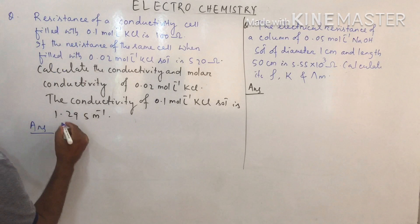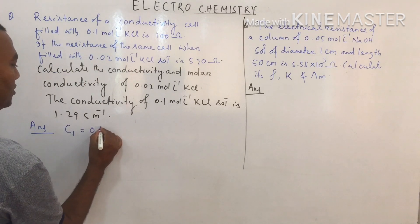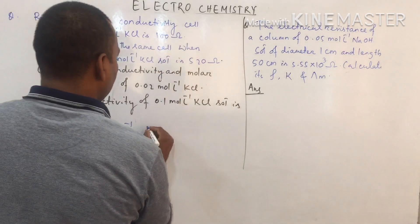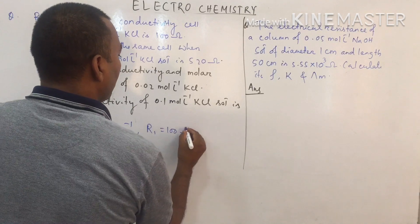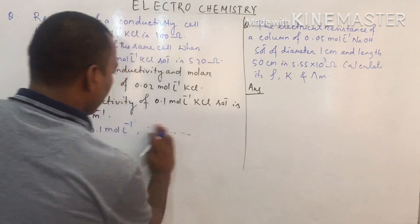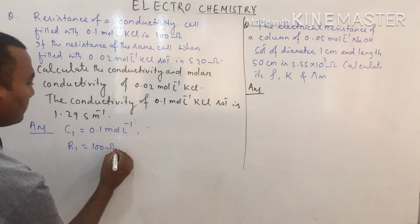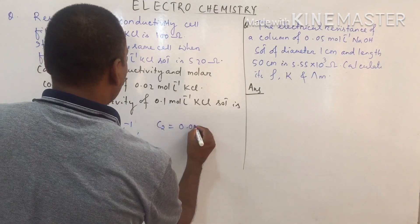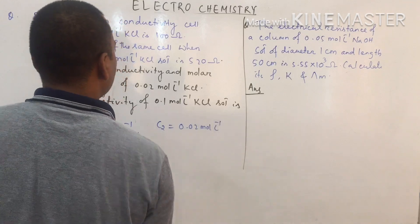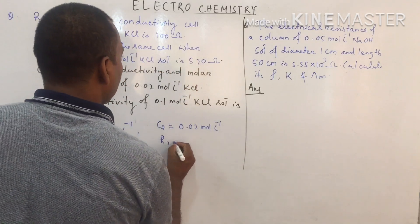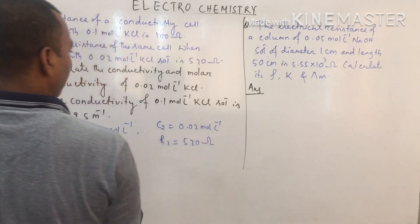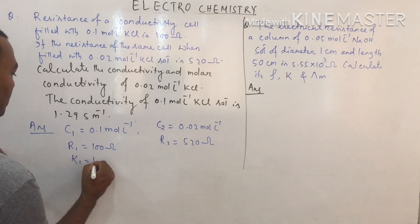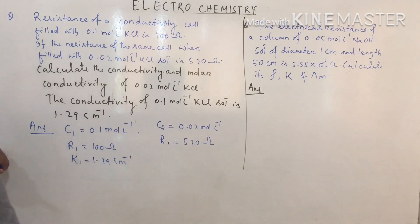Check what data are given. First, concentration C₁ = 0.1 mol/L, resistance R₁ = 100 ohm. When concentration changes to C₂ = 0.02 mol/L, resistance R₂ = 520 ohm, and the conductivity κ₁ of 0.1 mol/L solution is 1.29 S/m.